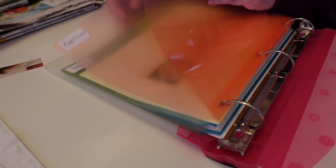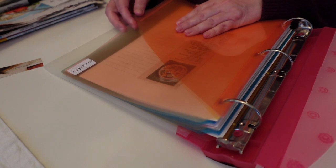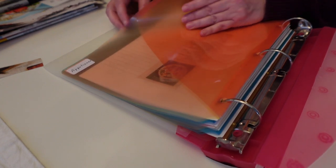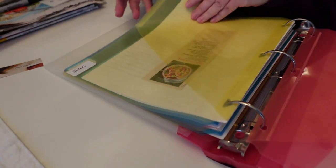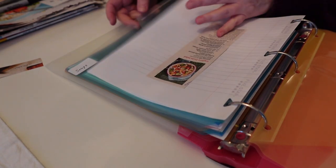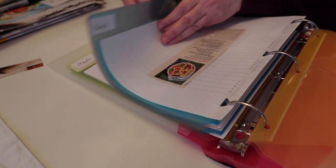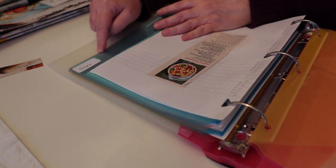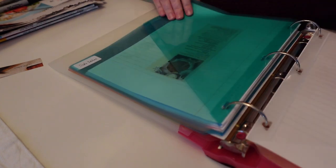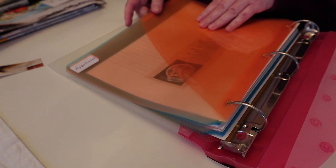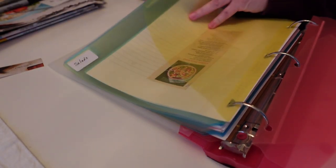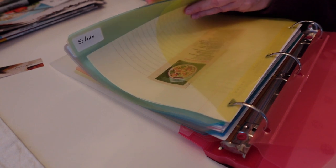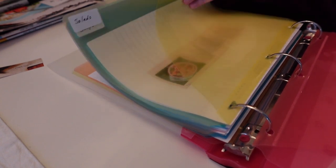The nice thing too about these pockets is that they are larger than the sheets of paper, so they also act as tabs without having actual tabs. And I have everything in the order that you would organize a meal with appetizers, soup, salad, side dishes, main dishes, and then breakfast and beverages and sweets.